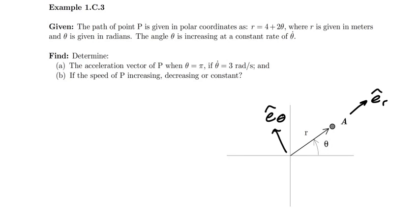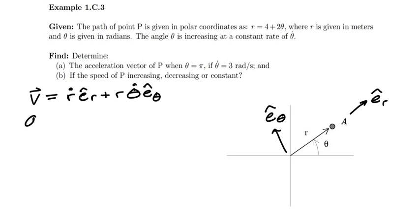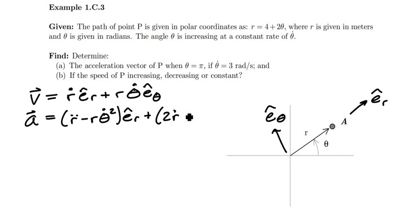Once I have those in place, it's prudent to remind ourselves that the velocity in terms of a polar coordinate set is given by r_dot in the e_r direction plus r times theta_dot in the e_theta direction. The acceleration vector is given by the quantity r_double_dot minus r times theta_dot squared in e_r, plus the quantity 2 r_dot times theta_dot plus r times theta_double_dot in e_theta.